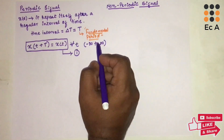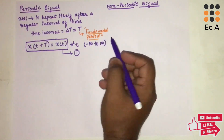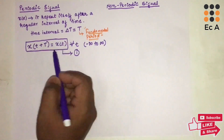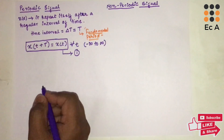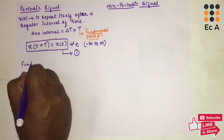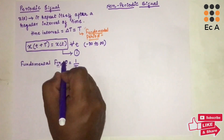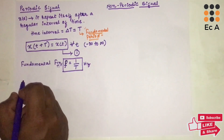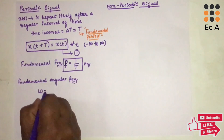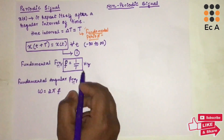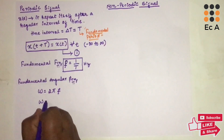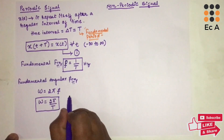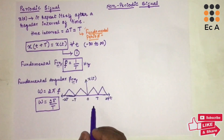The fundamental period is the time taken by the signal to complete one cycle. After this time period T, the signal repeats itself — such signals are known as periodic signals. The fundamental frequency f is equal to 1 by T, with unit Hertz. The fundamental angular frequency omega equals 2 pi f, and since f equals 1 by T, omega equals 2 pi by T.